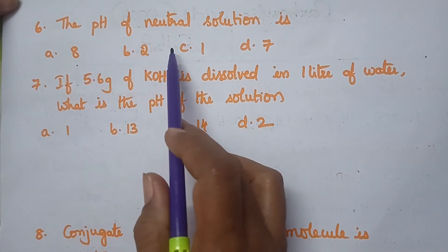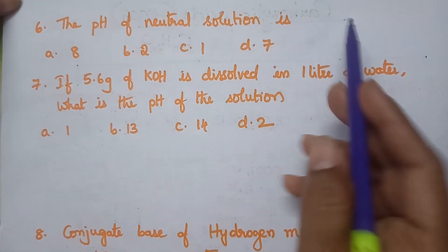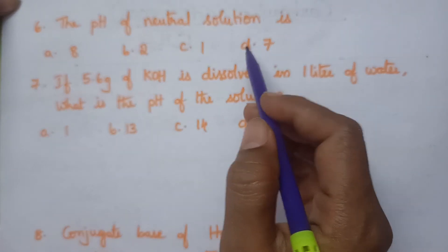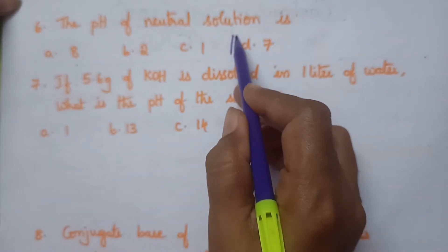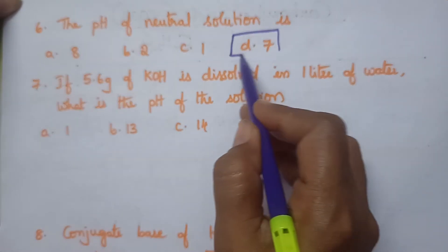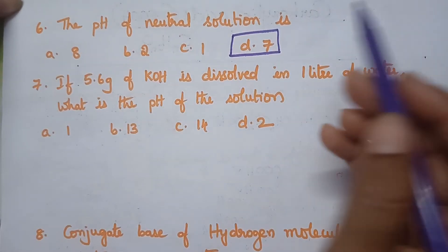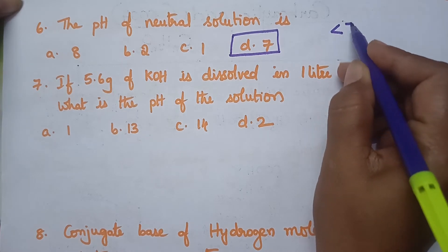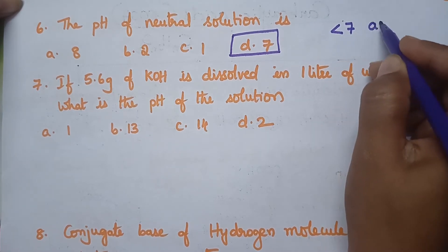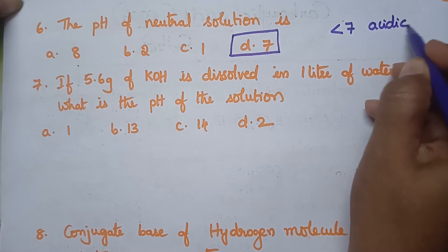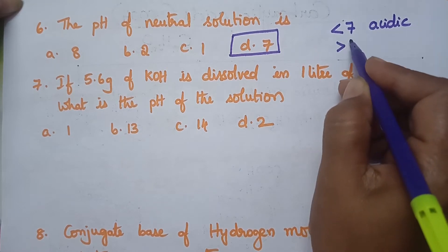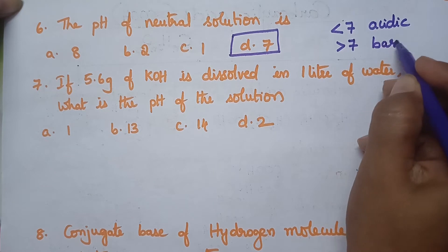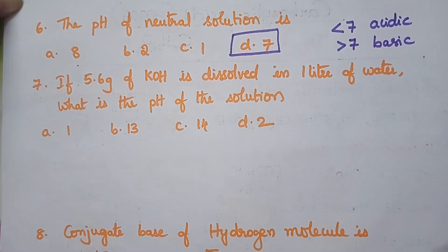The pH of a neutral solution: for a neutral solution the pH is equal to 7, so option D is the right answer. If the pH is less than 7 then the solution is called an acidic solution, and if the pH is greater than 7 the solution is called a basic solution.